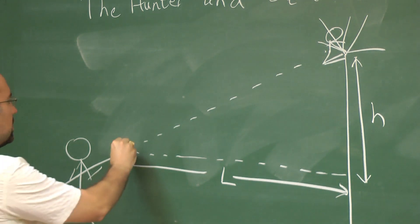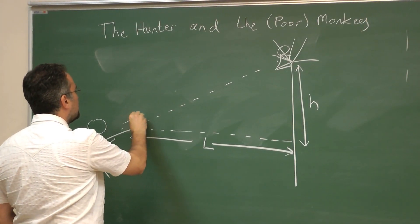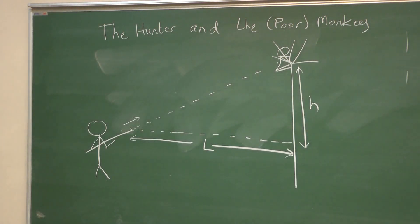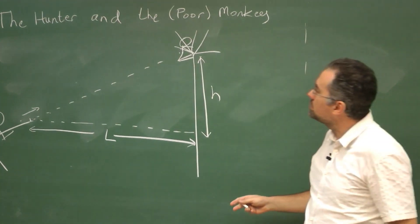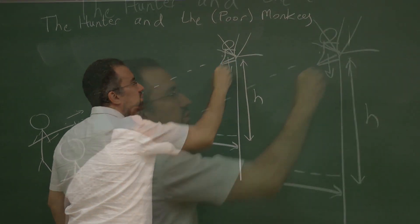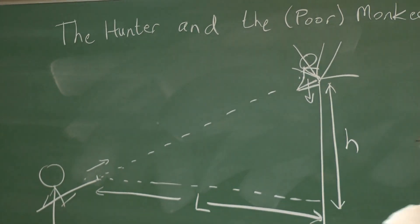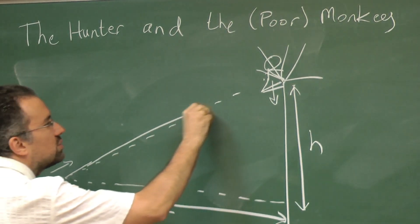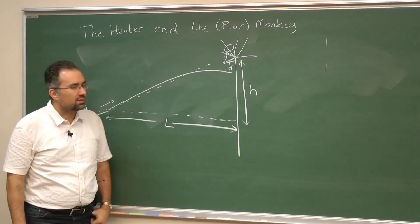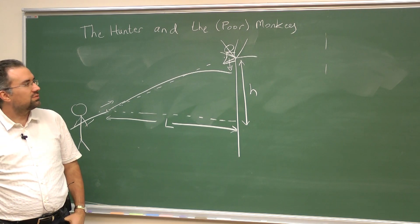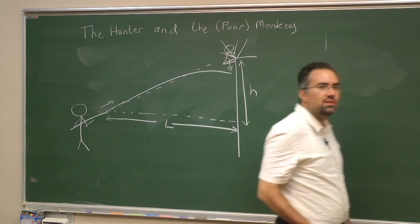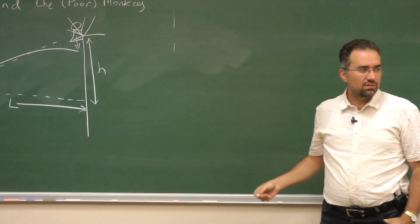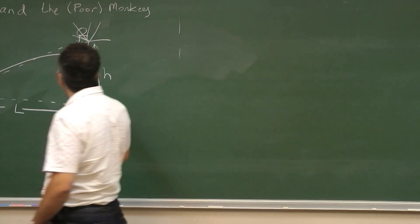Now the question is the hunter fires his rifle and he aims right at where the monkey is. And at the same time as he fires his rifle, the monkey reflexively just lets go of the branch and starts falling down from the tree. And of course the bullet flies towards the monkey. And of course we have gravity acting on the bullet so it will curve downwards and the monkey will fall down. Now the question is will the bullet hit the monkey or not? Will the monkey be saved? Or will the poor monkey be shot?